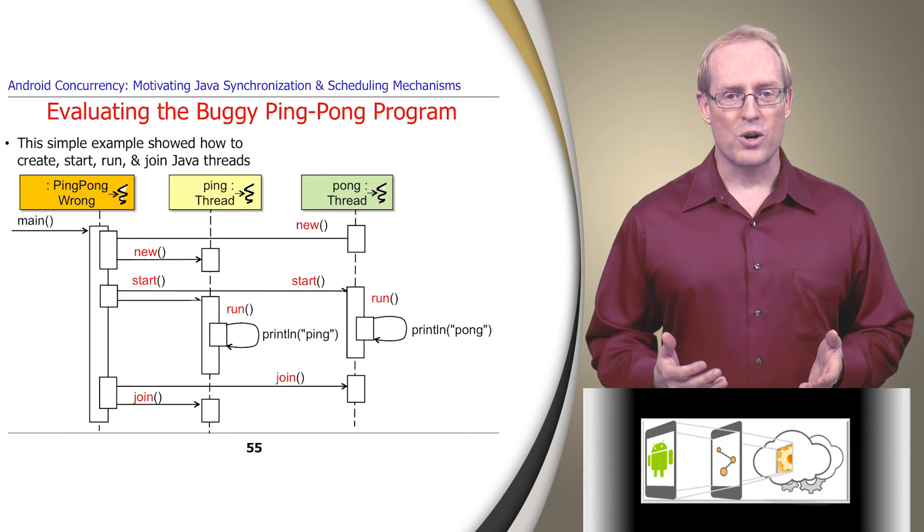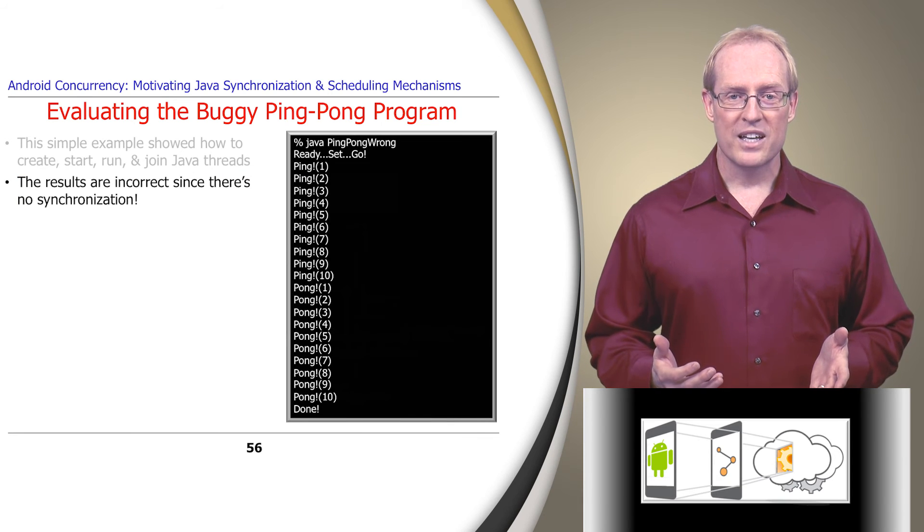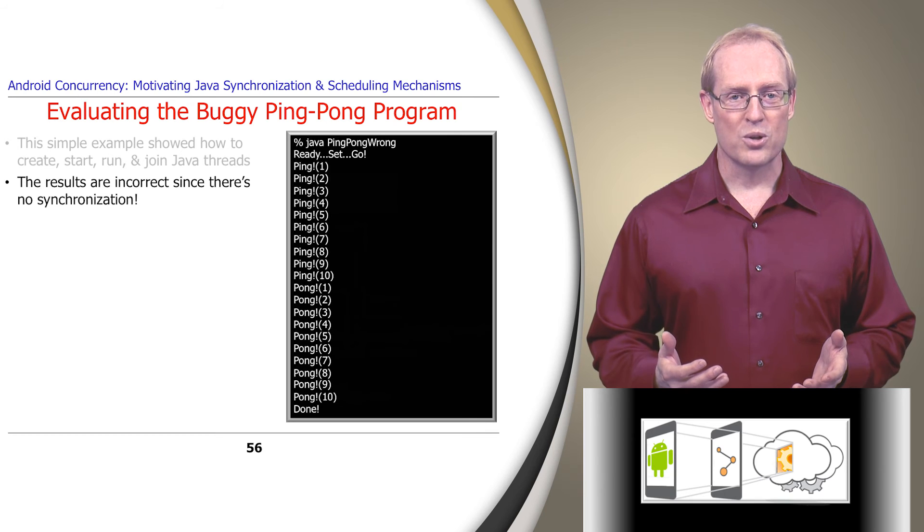This second example showed how to create, start, run, and join multiple Java threads. Although these methods are used properly, the results are incorrect, since there's no synchronization to ensure the threads alternate their output as intended.